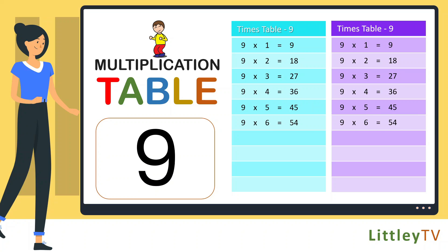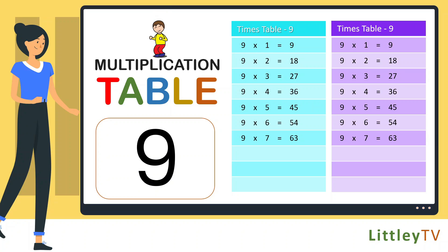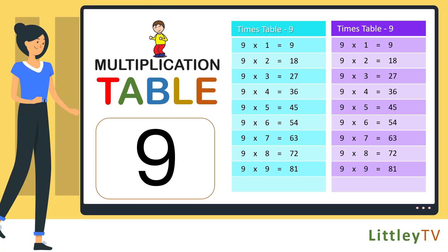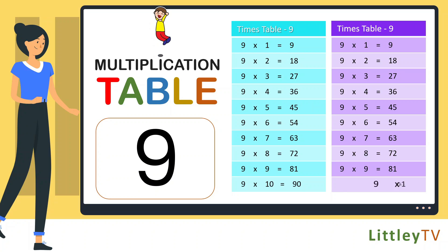9 sevens are 63, 9 eights are 72, 9 nines are 81, 9 tens are 90.